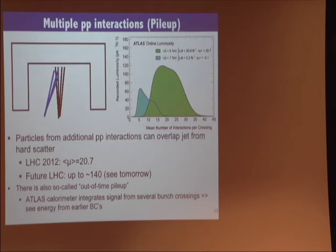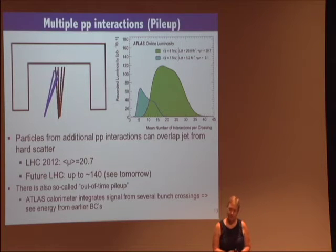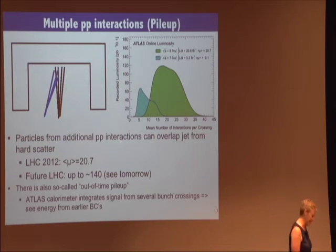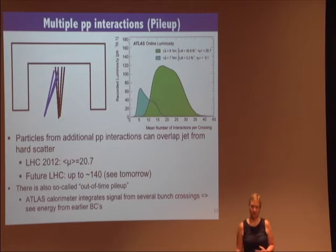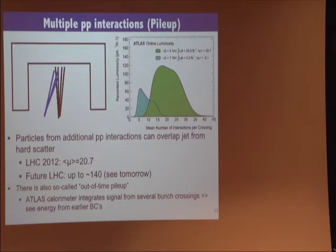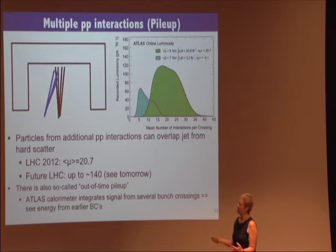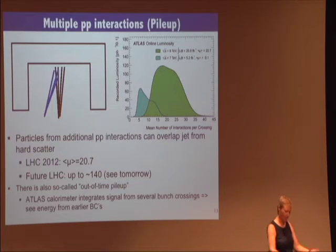In addition there is also so-called out-of-time pileup. The integration time of the calorimeter in ATLAS is 600 nanoseconds, while the bunch spacing at the LHC is only 50 nanoseconds — so basically we are observing 10 interactions simultaneously in a given one.